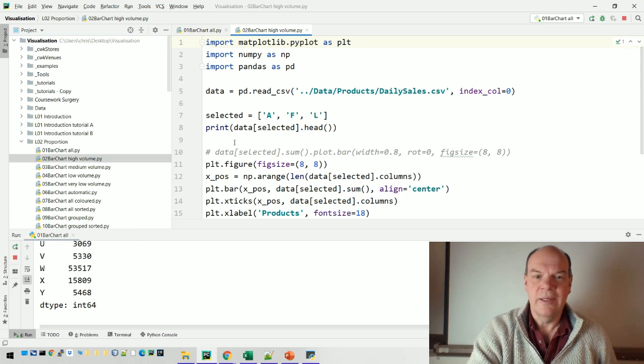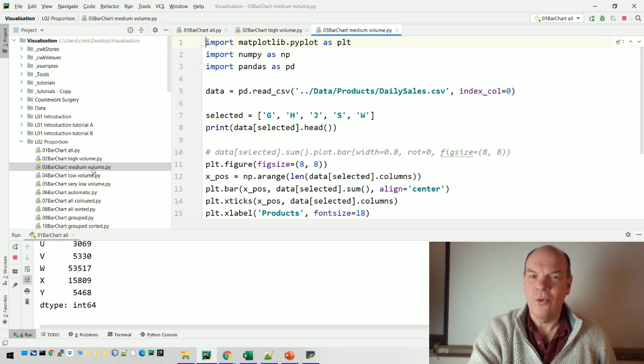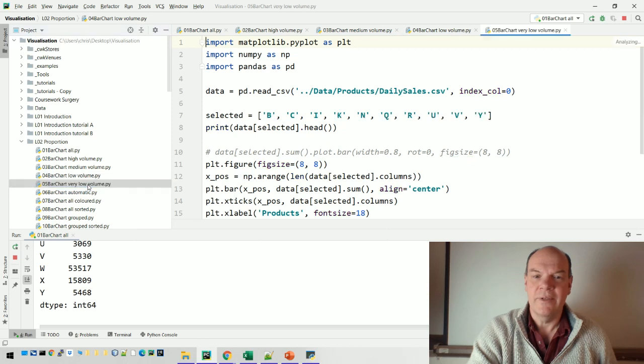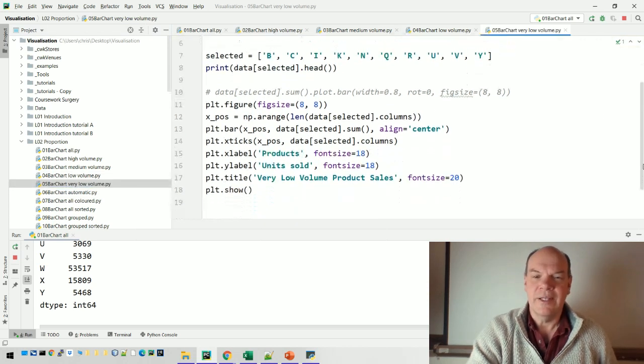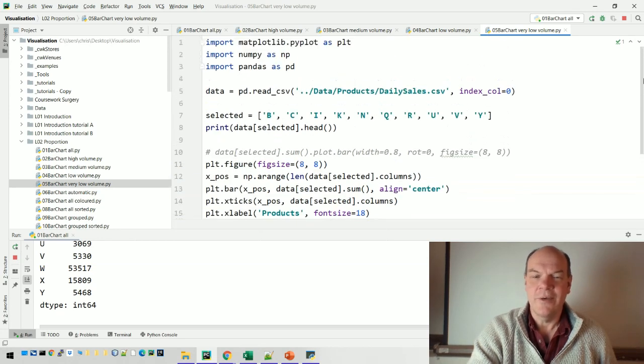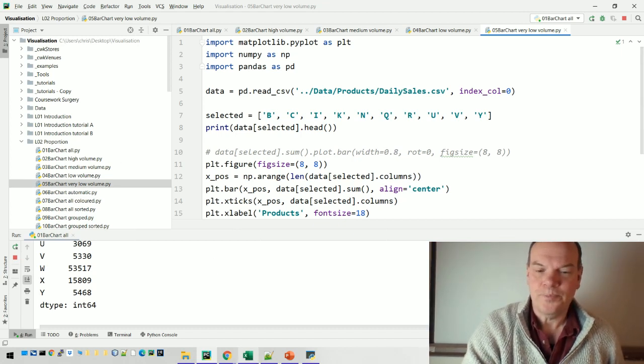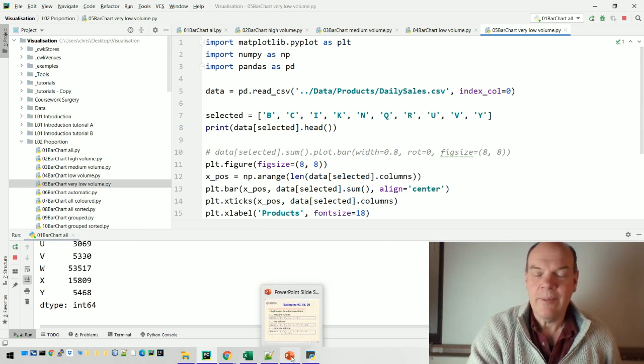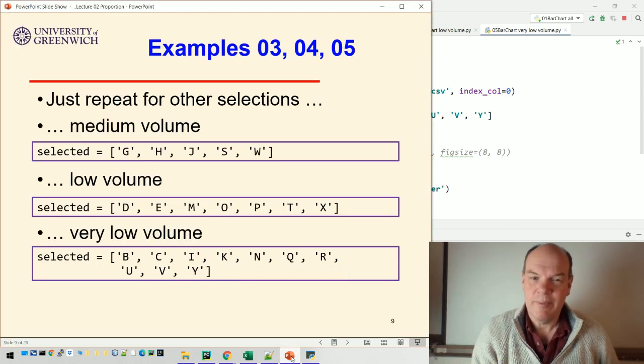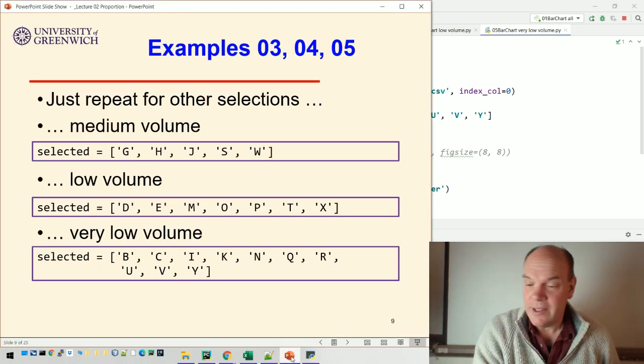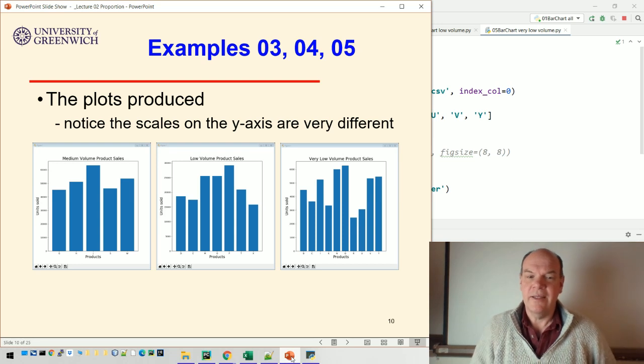Let me just show you that. So here's two with A, F and L selected. Three, it's got a different set of selected, but all the other code is exactly the same. Four, different set of selected. And five, different set of selected. Oh, and the chart title I've changed, obviously as well to very low volume in this case. So you can easily grab all the different segments of your data like this, just by specifying exactly which columns you want to visualize. And if I do that, there's the charts come out.